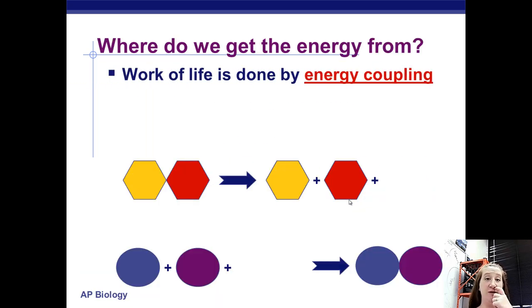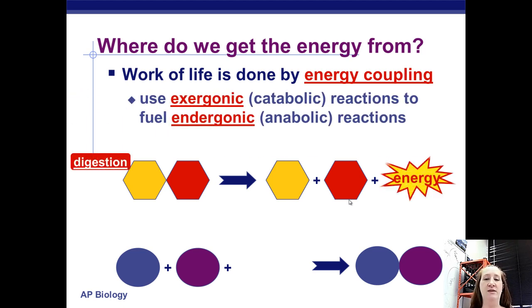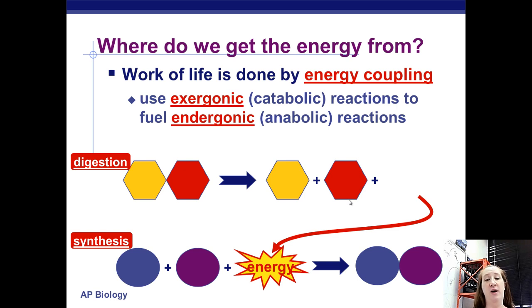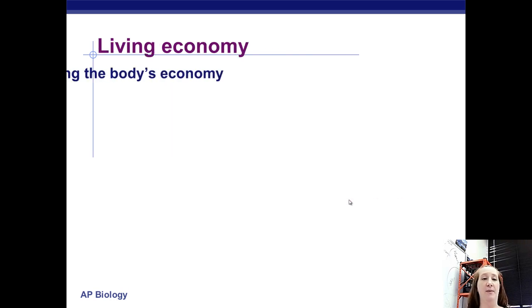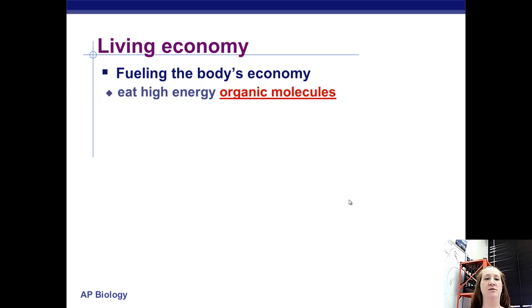Alright, so remember we just talked about this when we talked about enzymes. That the work of life is done by coupling reactions. A reaction that releases energy is put together with a reaction that needs energy. So this top reaction releases energy. And then the energy from that goes into the bottom reaction and makes the bottom one happen. Well, how is it that we shuffle this energy around?